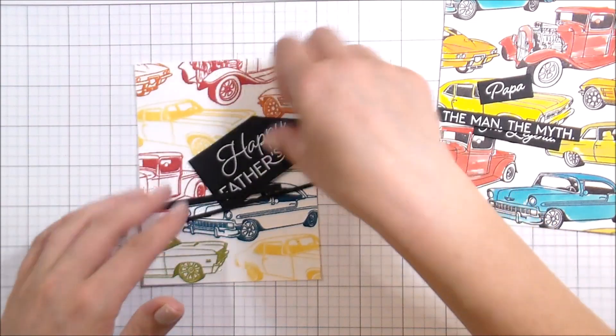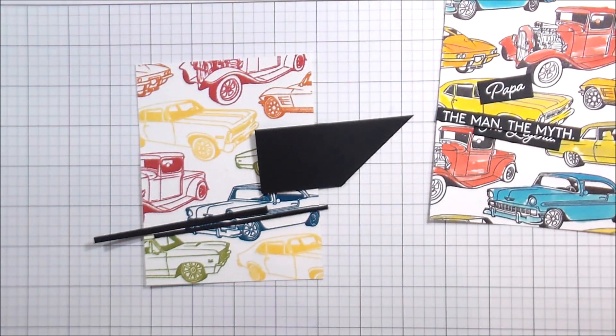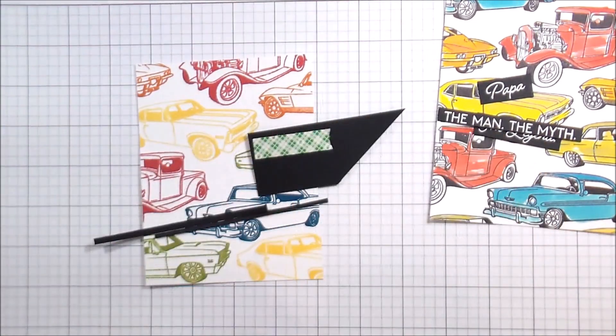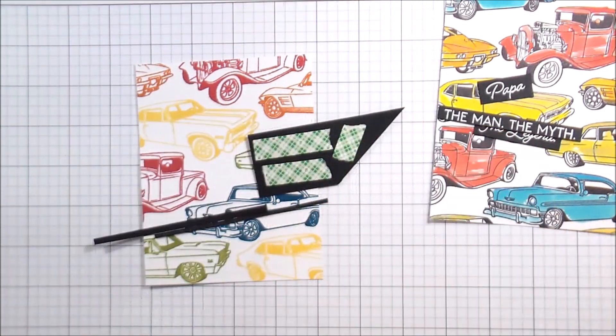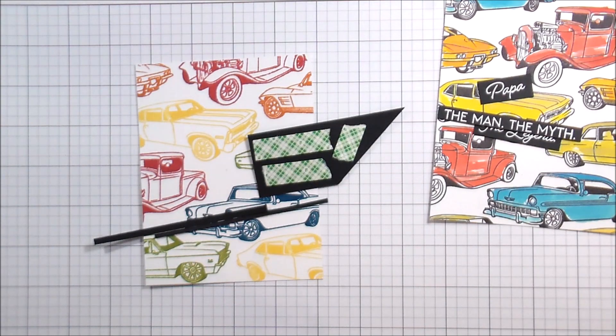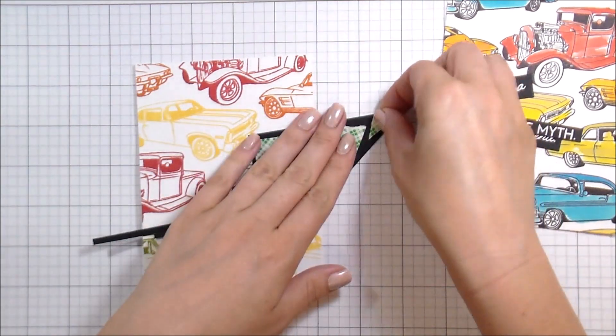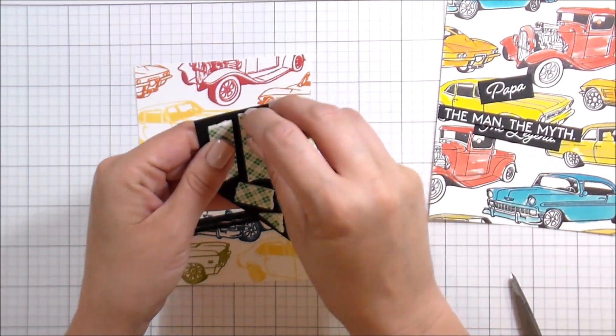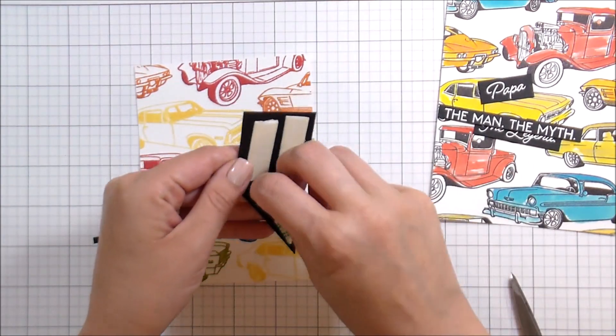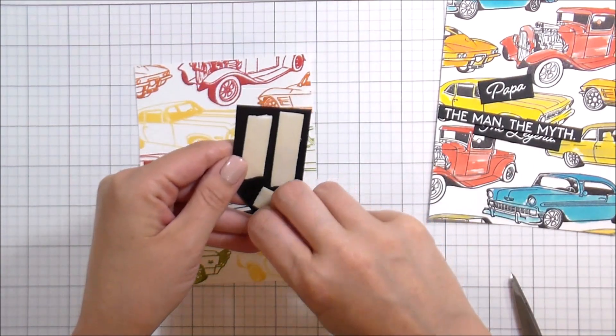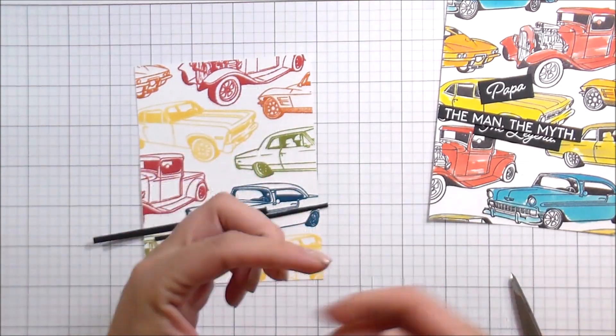So oftentimes with masculine cards, you know, you don't put flowers, you don't put sequins, you're not putting glitter. So sometimes it can feel like it's missing something, but there are other ways to embellish. Enamel dots are a great one. If you just can't help but use sequins, like Nuvo drops or the little circle embellishment stickers, those are all great.